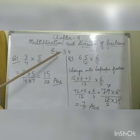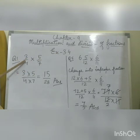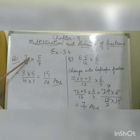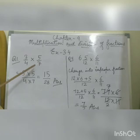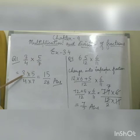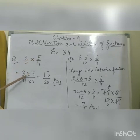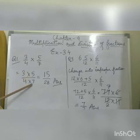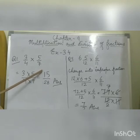Let's start question number 1 of exercise 34: 3 upon 4 multiplied by 5 upon 7. Using the formula — product of their numerators upon product of their denominators — we get 3 multiplied by 5 upon 4 multiplied by 7. That is 15 upon 28, so the answer is 15/28.